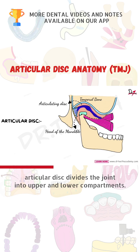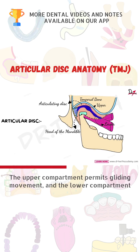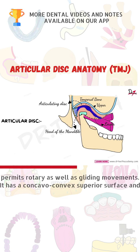Now the articular disc divides the joint into an upper and a lower compartment. The upper compartment permits gliding movement, and the lower compartment allows rotary as well as gliding movement. Remember this.